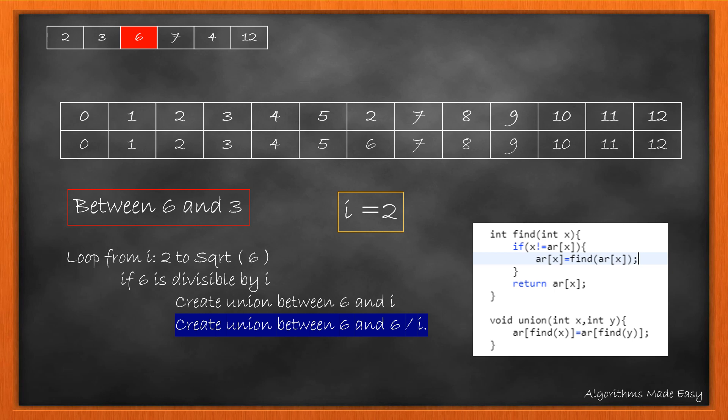In the second statement, we create relationship between 6 and 6 by 2 which is 3. Now the parent of 6 is 2. So the value needs to be updated at index 2 and the parent of 3 is 3. So the value at index 2 becomes 3.